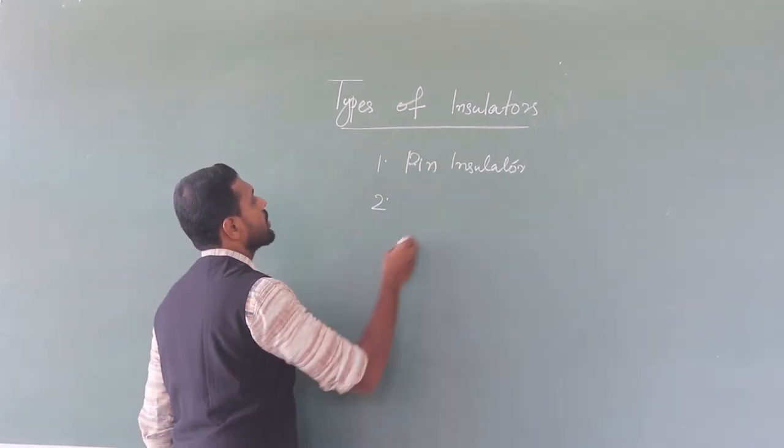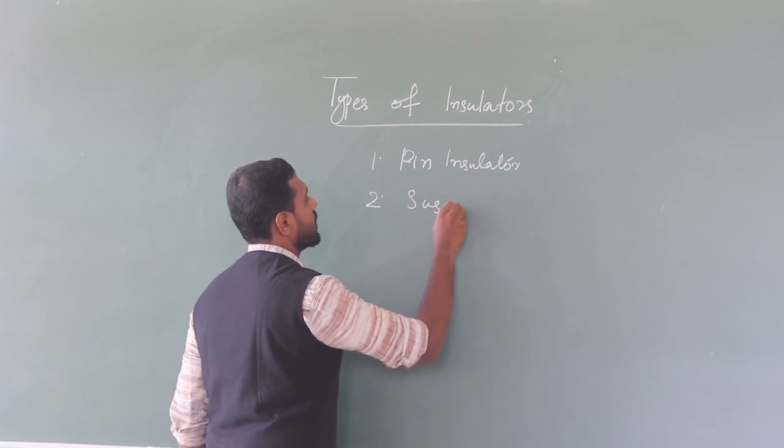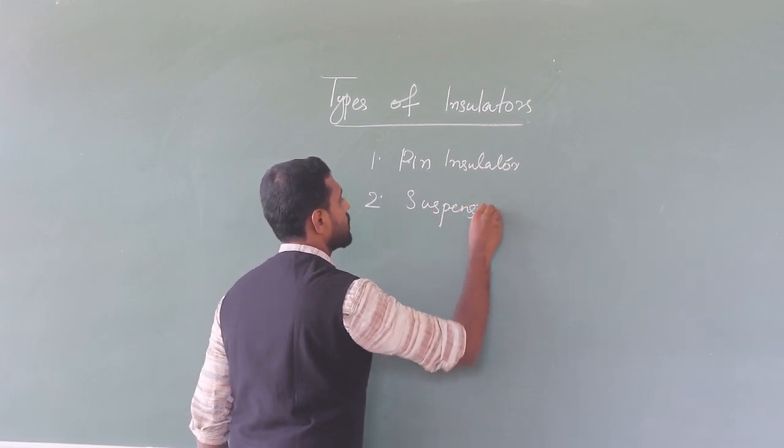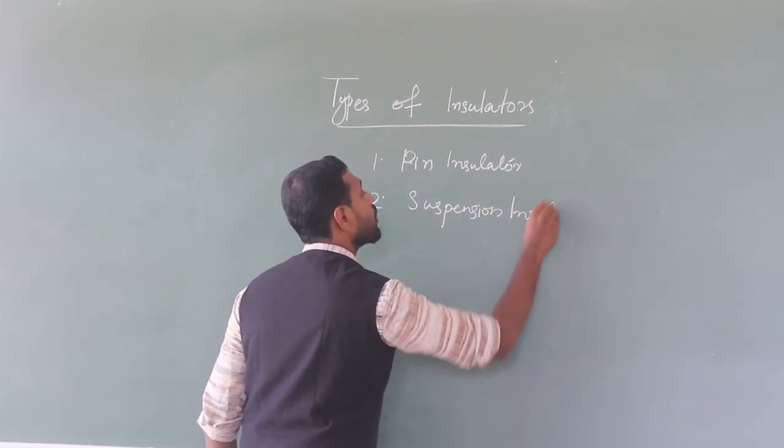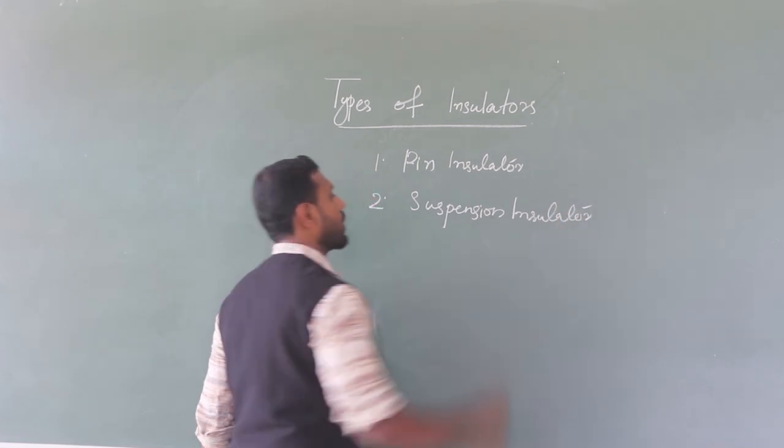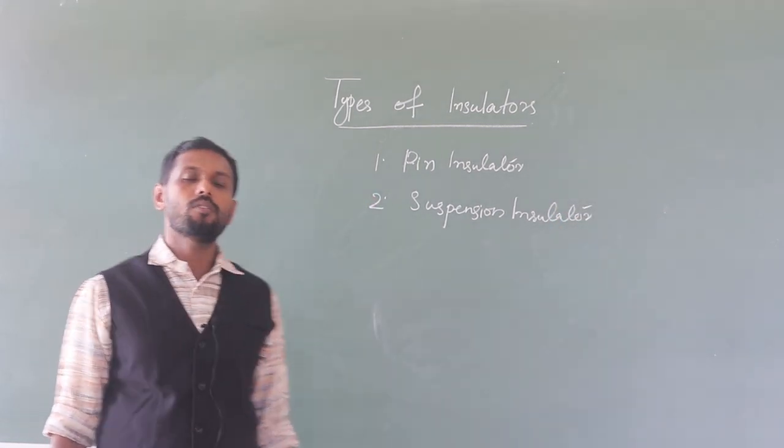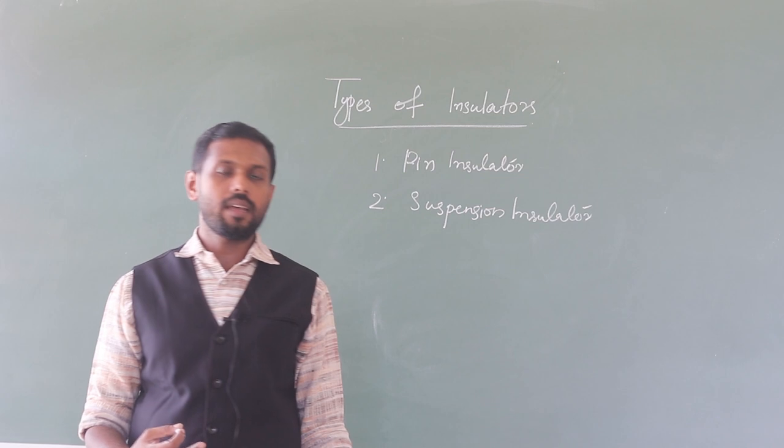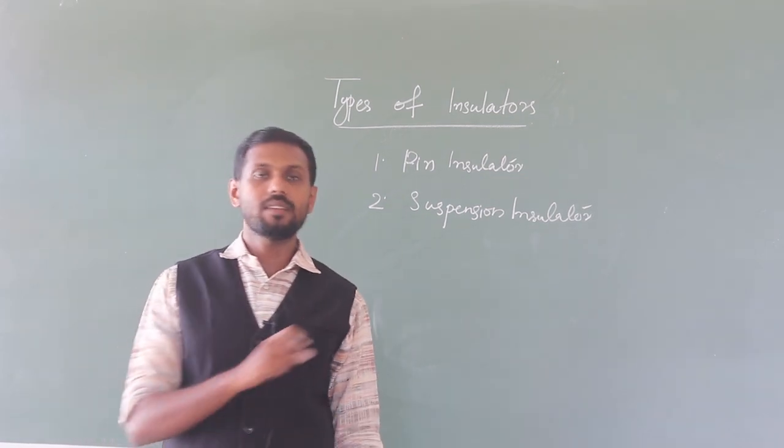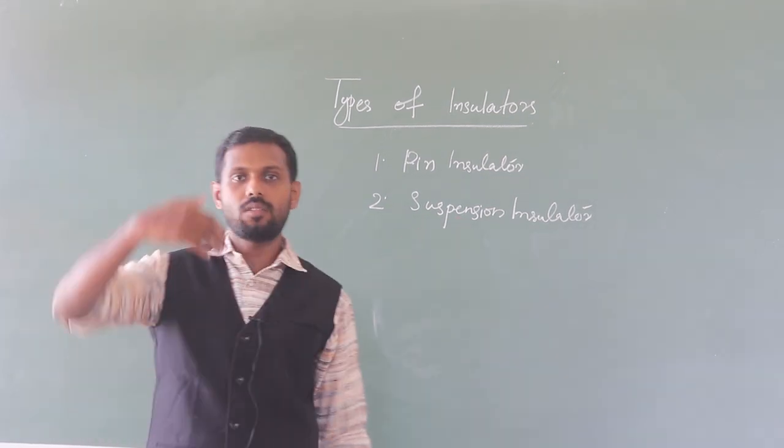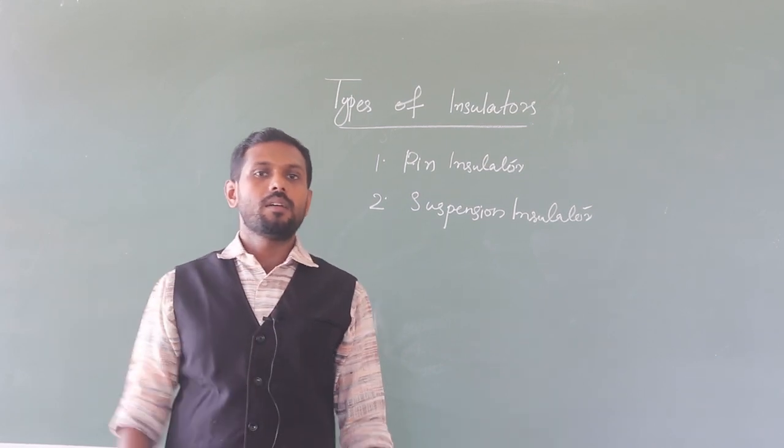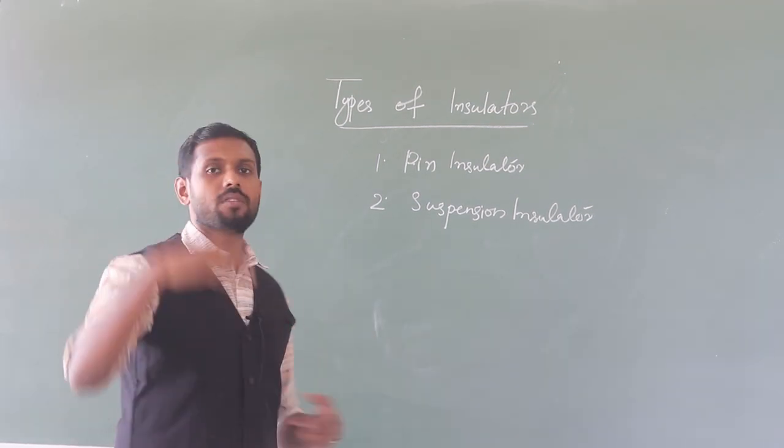Then second one is suspension insulator. For higher voltage rating or voltage rating above 33 kilovolts, we use suspension insulator. The word itself gives the meaning suspended or suspension. This insulator consists of a number of units.